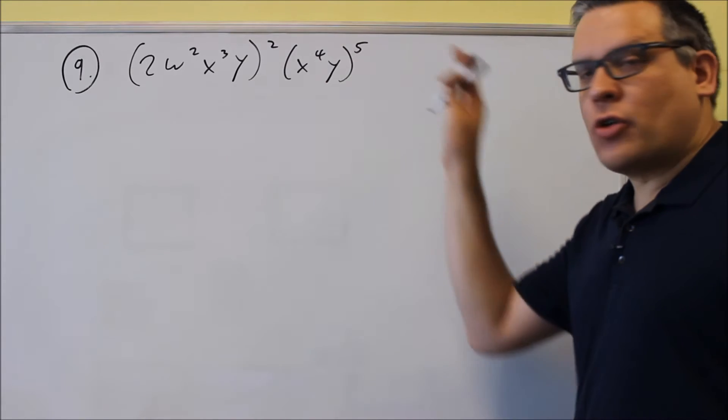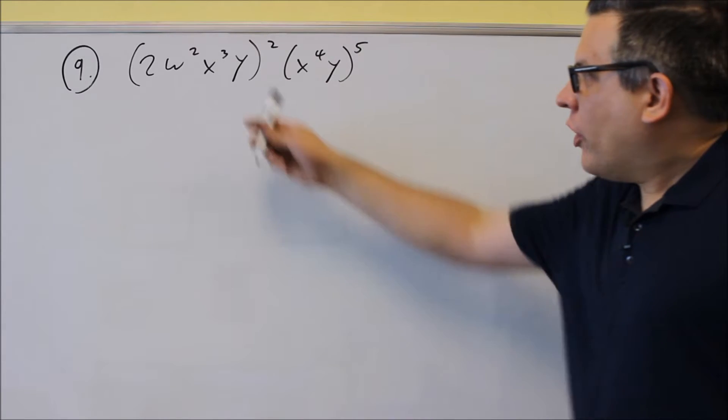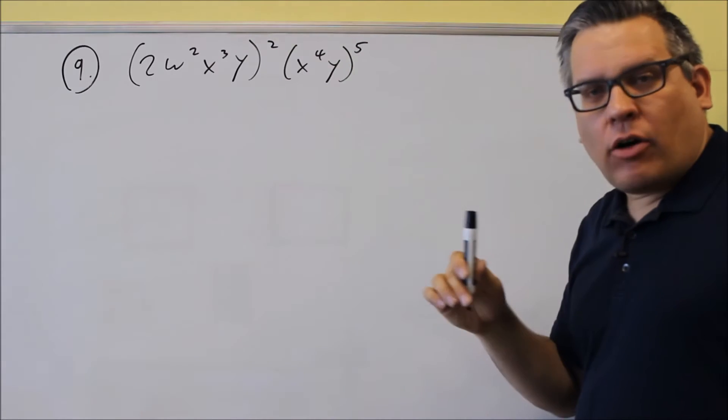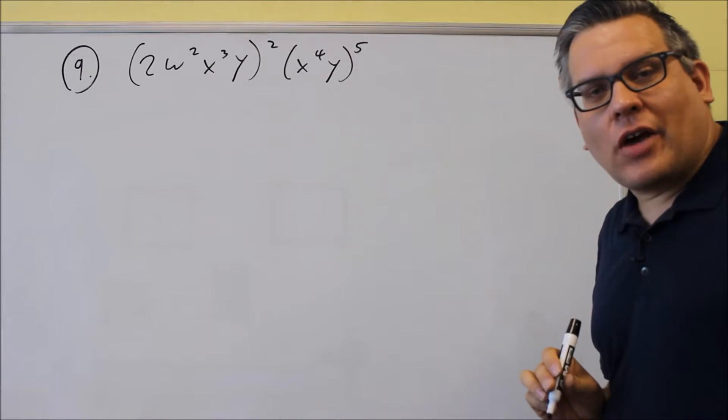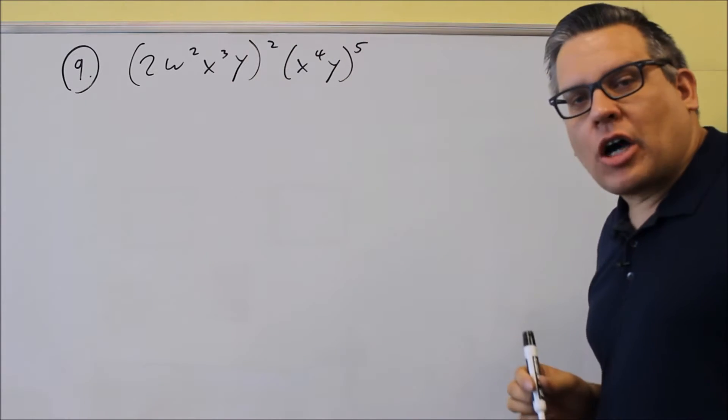Okay, for number 9, we're going to put all the exponent properties together. We have a power raised to another power. We're also going to end up multiplying things that have the same base. This kind of does a couple different rules.